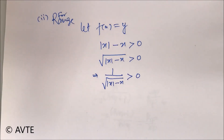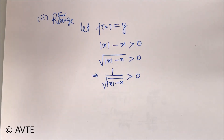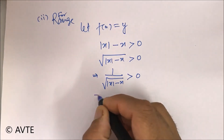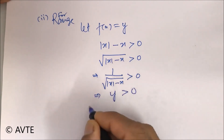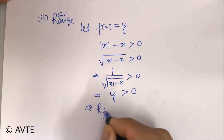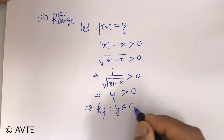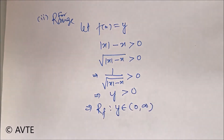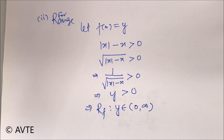If I put 5, then the reciprocal will be smaller than 5, but if I put 1/5, then the reciprocal will be greater than that number. But in any way, it will remain positive — and this is nothing but y. So the range is clearly a positive quantity: 0 to infinity. The domain is all the negative quantities, whereas the range is all the positive quantities.